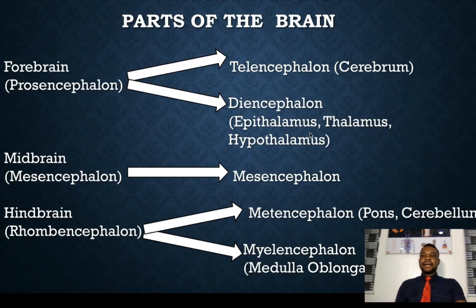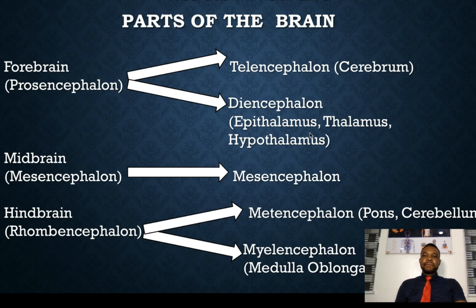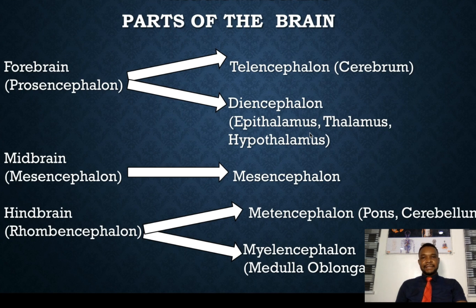Now embryologically, the brain has three major components. We have the forebrain, which is the prosencephalon; the midbrain, which is the mesencephalon; and the hindbrain, which is the rhombencephalon. The forebrain gave rise to the telencephalon, which is the cerebrum, and the diencephalon, which gives rise to the epithalamus, thalamus, and hypothalamus. The hindbrain gives rise to the metencephalon — the pons and the cerebellum — as well as the medulla oblongata, which is the myelencephalon. So we have the telencephalon, diencephalon, mesencephalon, metencephalon, and myelencephalon as components of the brain.